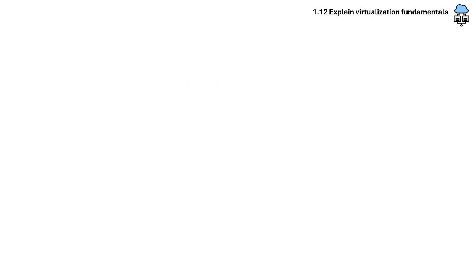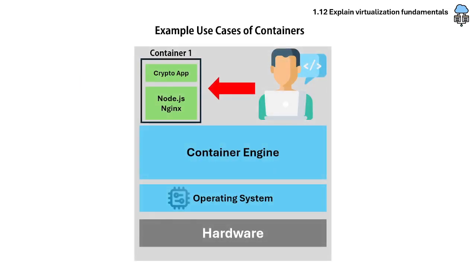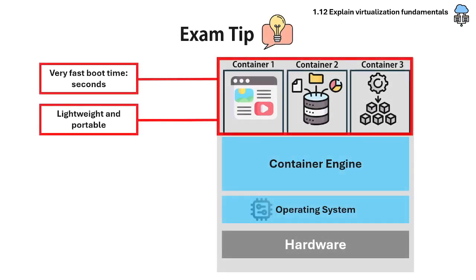A use case example: a web developer builds an app using Node.js and packages it with NGINX in a container. Exam tip: know that containers are faster and lighter than virtual machines, and that they are excellent for app deployment and DevOps pipelines.